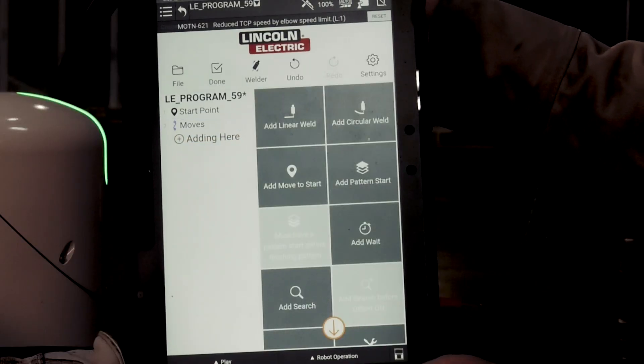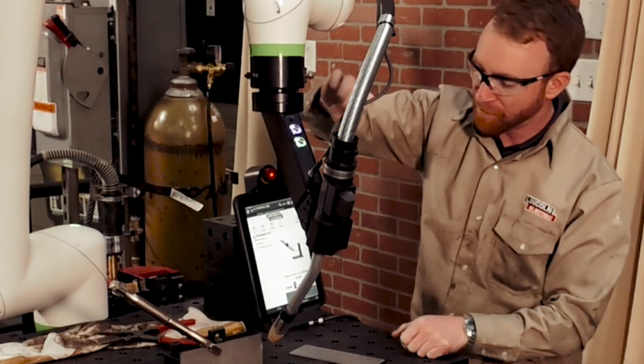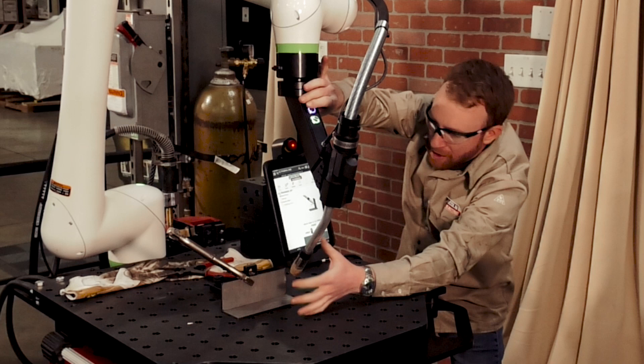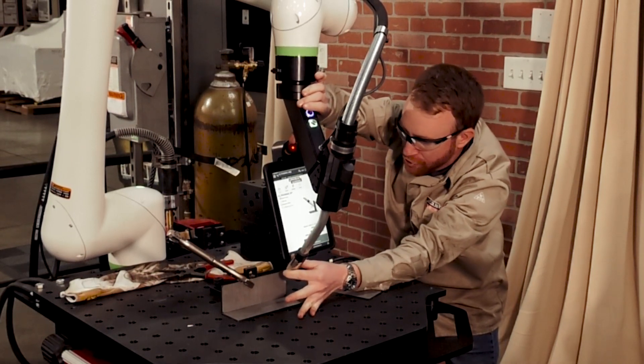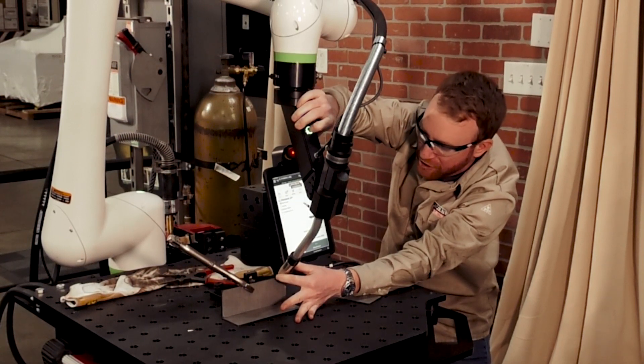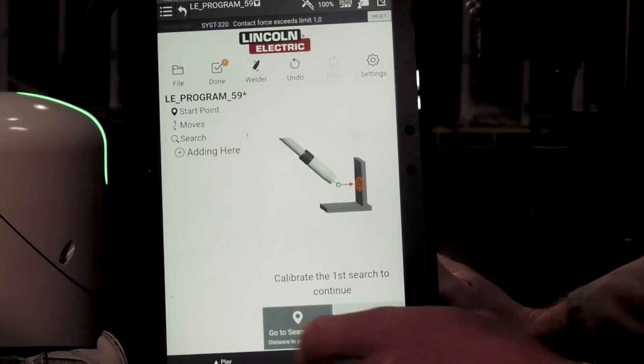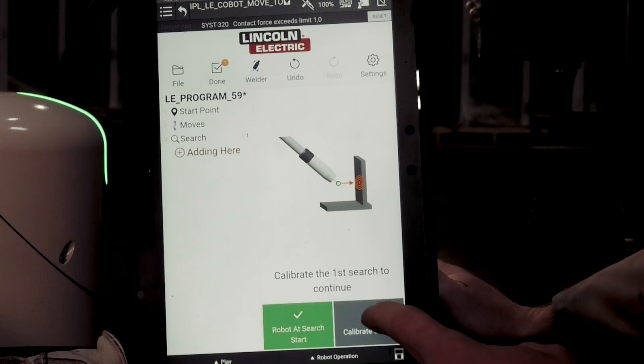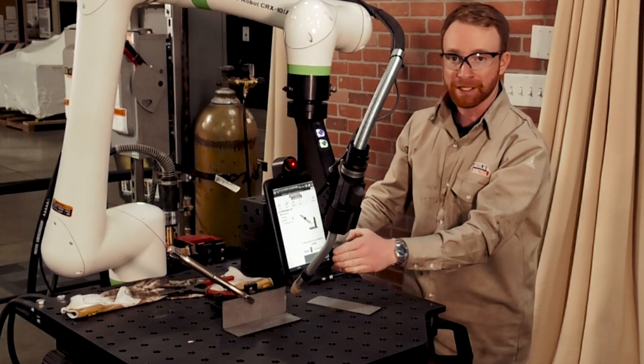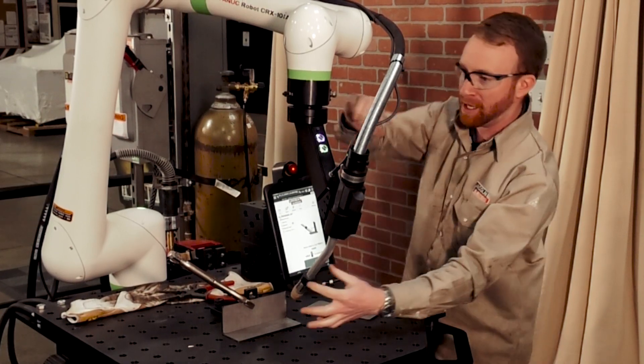So before we go any further, we're not going to do weld, we're going to go more choices. We're going to go to add search. We're going to find that location for the torch. We're going to press that green button and then we're going to just move that torch directly in a straight line to where the wire touches the material. We're going to press that green button again, and then it's going to ask you to search. We're going to press the search button, then we'll press calibrate so it makes sure to find the material and go back to the same location.